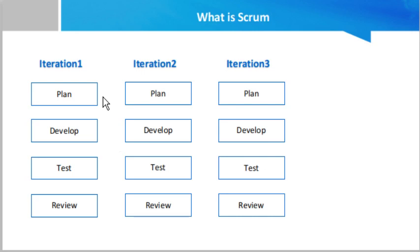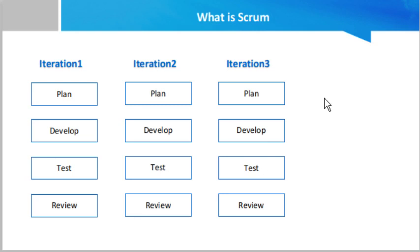In the Scrum approach, every month you are getting customer feedback on how things are going. Based on their feedback, every next iteration is better than the previous one. Once you finish an iteration, you review it with the customer, get their feedback, and make necessary corrections or improvements. When all iterations are complete, you have a finished product that is much better because you incorporated market and customer feedback.